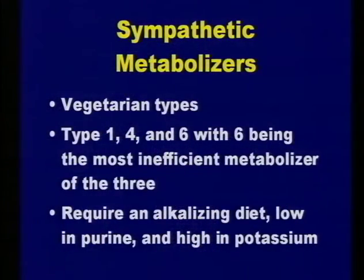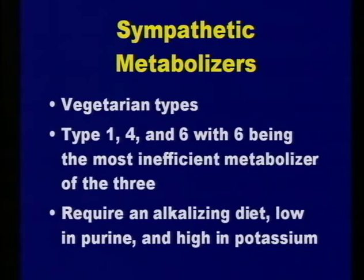Now we're going to discuss seven types—general categories you can plug clients into after you have their blood work and fill out the worksheet. We'll discuss sympathetic metabolizers first. They have decreased digestive function and are usually in that anabolic or building mode because they have a weakened condition. Numbers one, four, and six are the sympathetic types—six is the most inefficient and weakest of these, while one is the strongest, four is the midpoint, and six is the weakest.